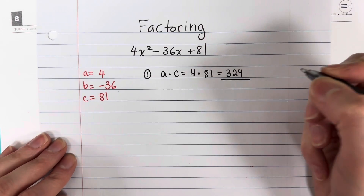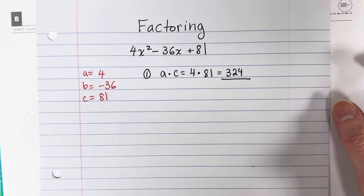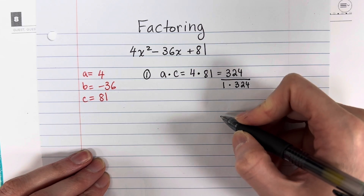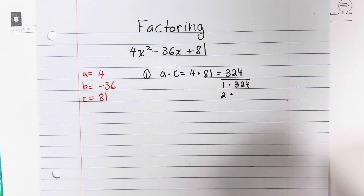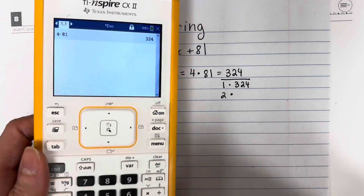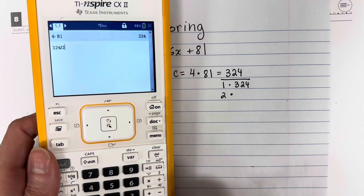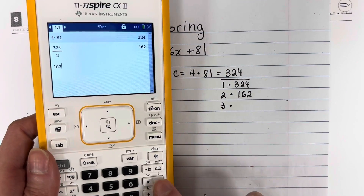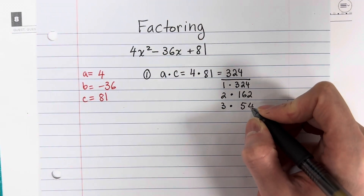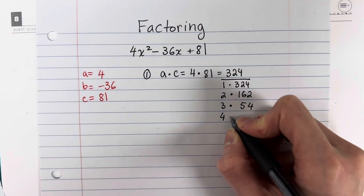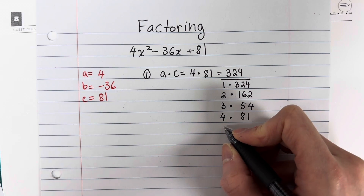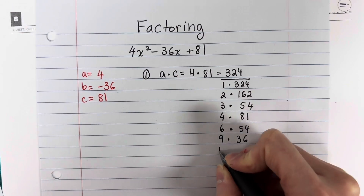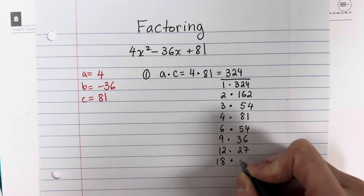We list factor pairs of 324, starting from 1: 1 times 324, 2 times 162, 3 times 108, 4 times 81. 5 does not work — it gives a fraction, so skip that. Then 6 times 54, 9 times 36, 12 times 27, and 18 times 18. We stop there because the factors would just repeat after that.